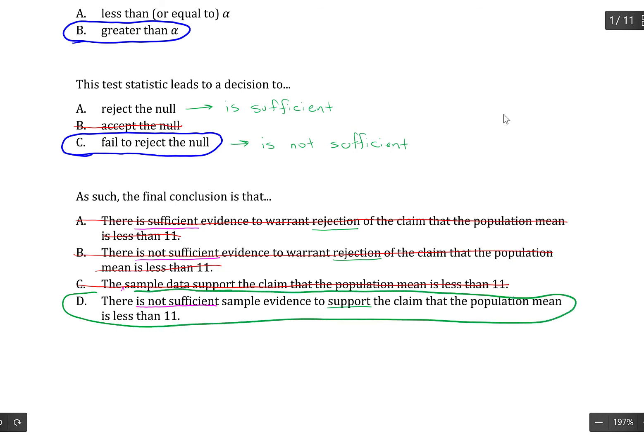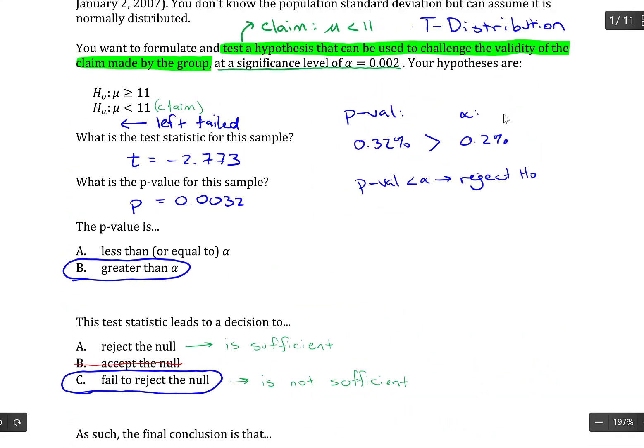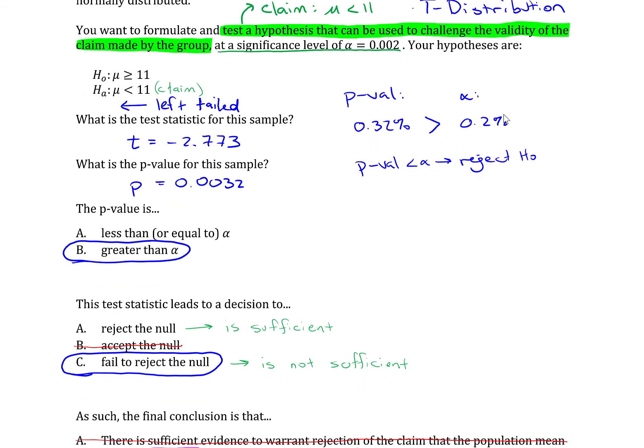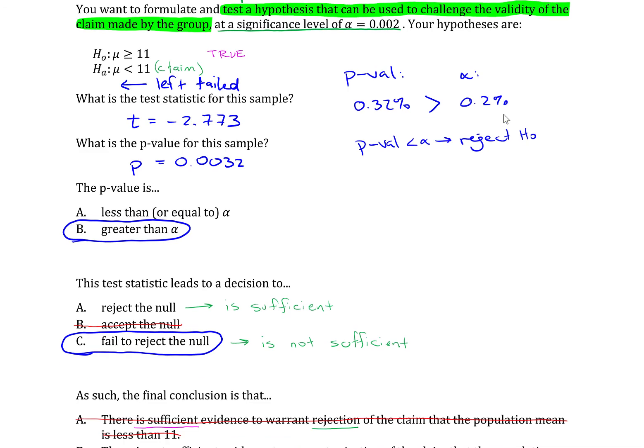But if you want to understand the logic there, it's fairly straightforward to walk through. So for instance, we have in the decision failed to reject the null. So we're not saying that it's true, but we're kind of saying that it's true-ish. Okay. It's more likely to be true than it is not to be true. So let's just assume for argument's sake that that means it is true. And if that's the case, then that leaves this other statement to be false.